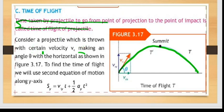Consider a projectile which is thrown with certain velocity v₀, making an angle θ with the horizontal as shown in Figure 3.17.